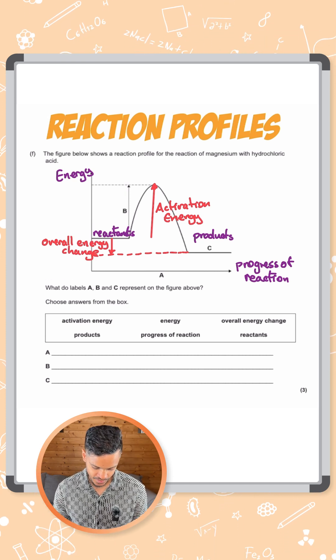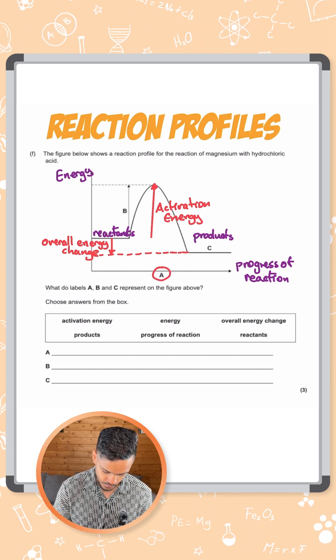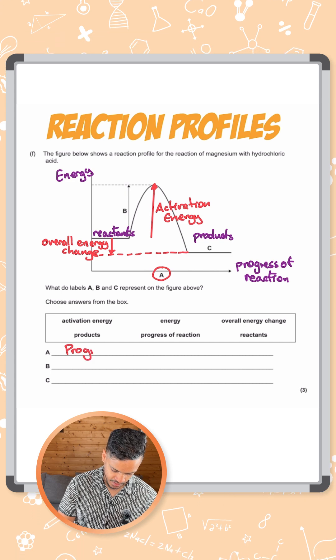OK, so what's the question asking us? The question is asking us for A, which is our x-axis. So that's going to be progress of reaction.